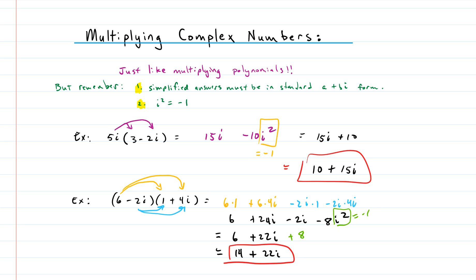Multiplying complex numbers is pretty straightforward — it's a lot like multiplying polynomials. You just have to remember to treat i like a variable, and if you have a power of i greater than one, rewrite it in an equivalent form with a power less than or equal to one. If this was helpful, please like the video, subscribe to the channel, and leave a comment. Have a good day!